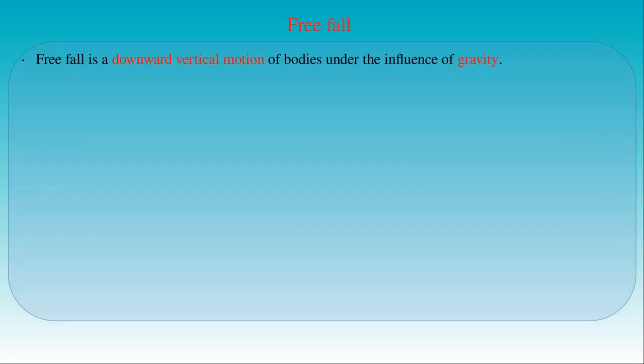The next basic motion we discuss is the free fall. The free fall is a downward vertical motion of bodies under the influence of gravity. Since free falling objects move along a vertical straight line, we talk about a one-dimensional motion, as in the case of uniform linear motion. The only difference is that the free fall is not a uniform motion. The everyday experience seems to contrast with the statement that free fall is always a downward vertical motion. By comparing the free fall of a ball and a feather, we will observe differences in their motion.